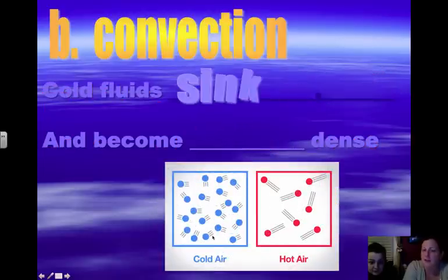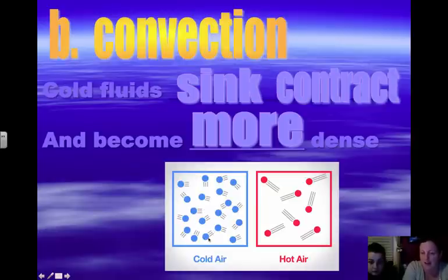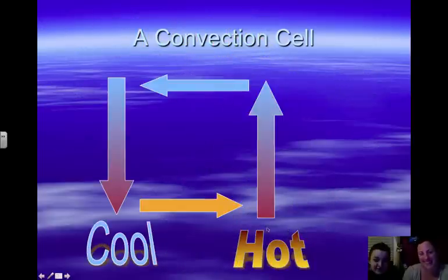Cold fluids sink and contract. When they contract they come together, becoming more packed, which makes it more dense. We see on this picture here cold air molecules more packed, more dense. Hot air molecules are less packed and less dense. The hot air goes up, goes across, goes down the cool air, and then it goes back to the hot air and starts rising again, forming the cell.